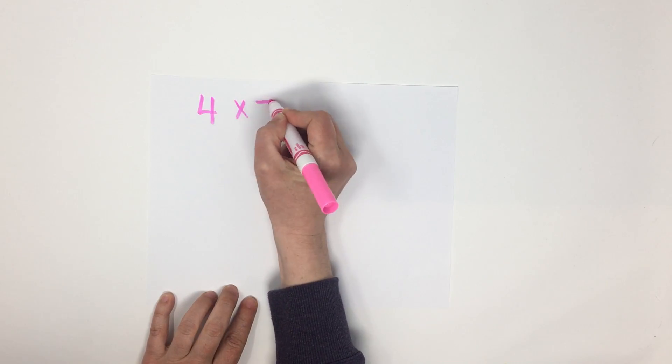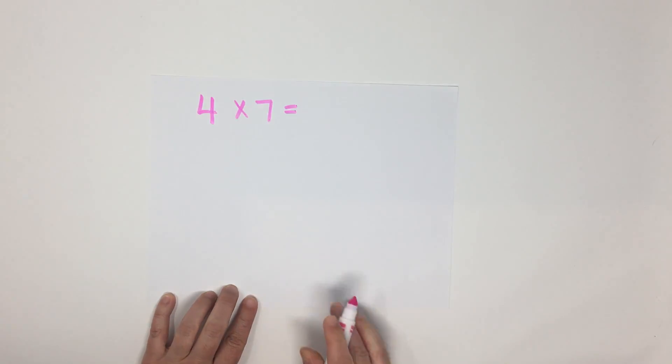Bonjour les amis! Today we're going to be multiplying by 4. So, let's take 4 times 7 and try and figure out what that is.